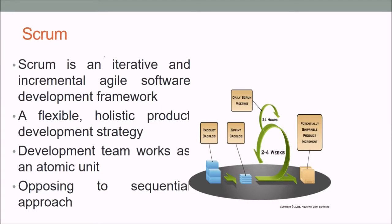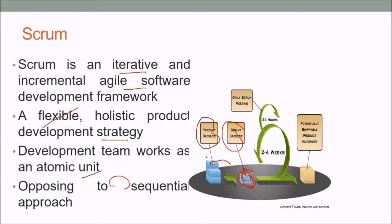Scrum is a type of agile — an iterative and incremental agile software development framework. It follows a flexible, holistic product development strategy where the team works as an atomic unit. It starts with a product backlog; the highest-priority backlog item is selected for a sprint. Within two to four weeks, the team delivers a potentially shippable product increment, with daily scrum meetings held every 24 hours.